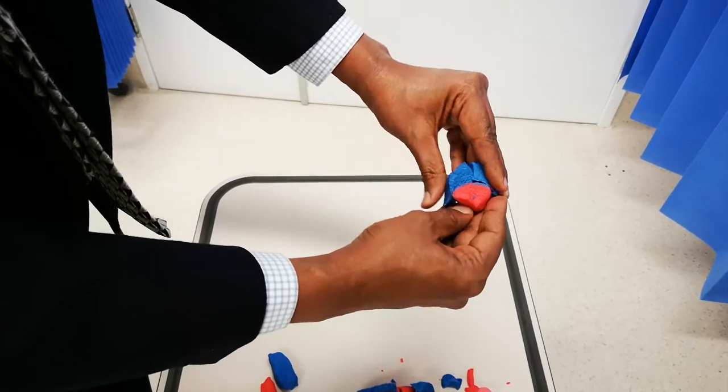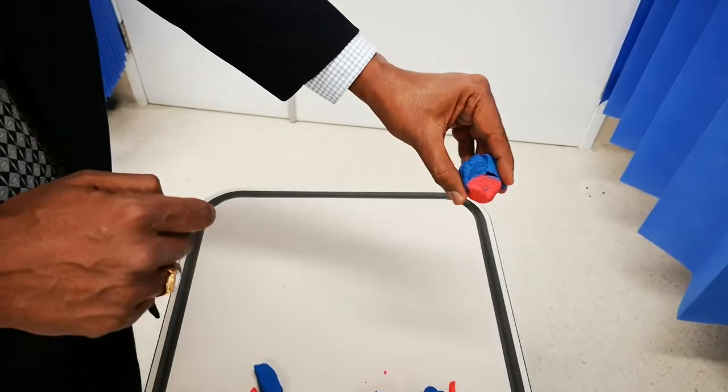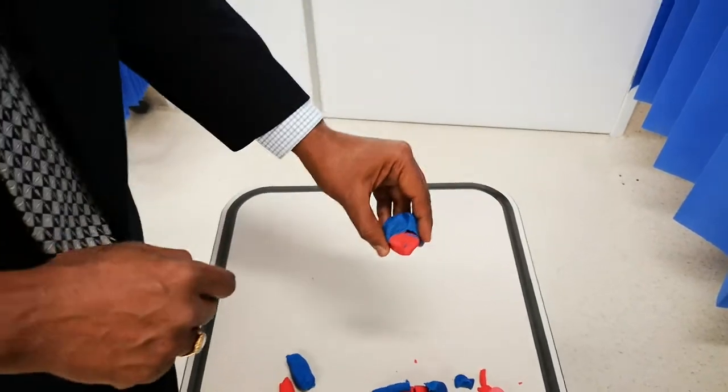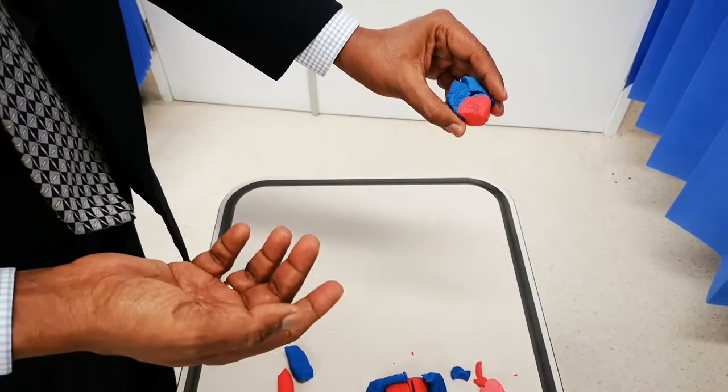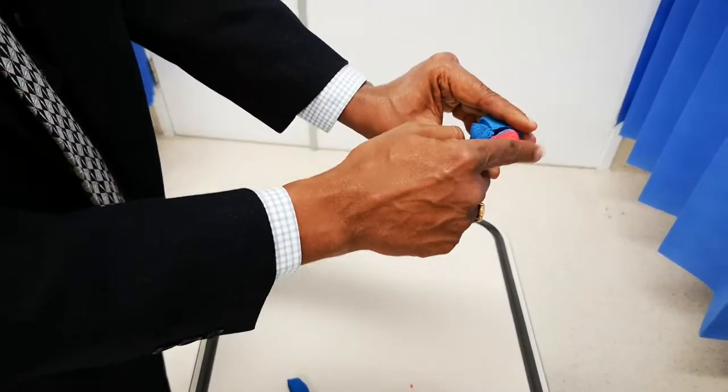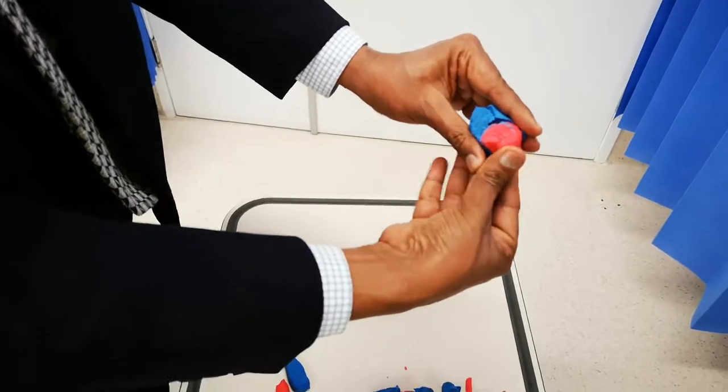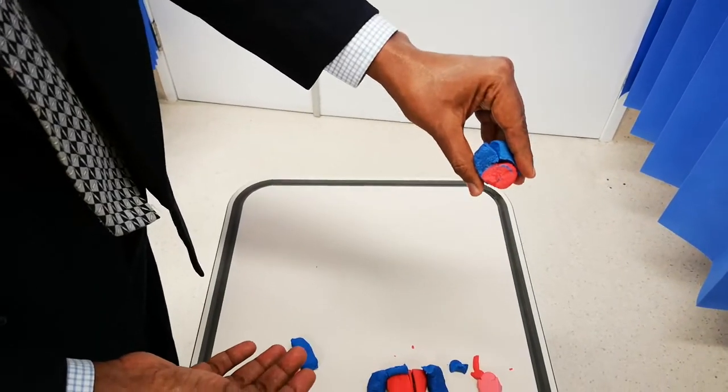And you can see how in this, the right ventricle is wrapping around the left ventricle. So, it looks a bit like a donut. Exactly. It looks like a donut with the right ventricle wrapping around the left and this left ventricle being nice and round and circular.